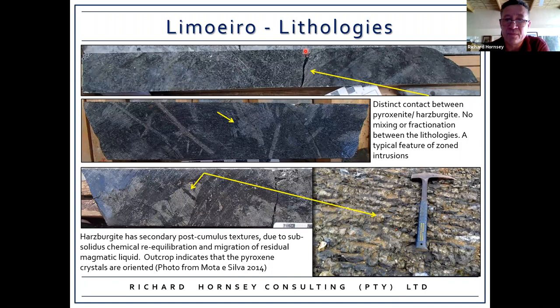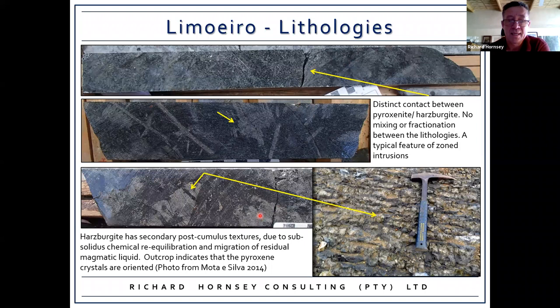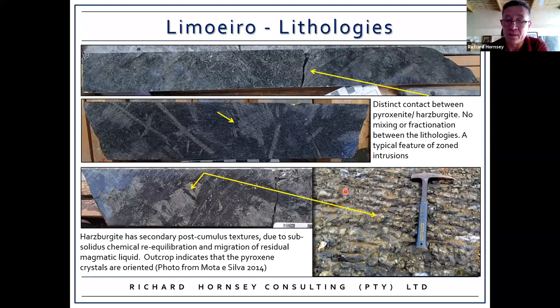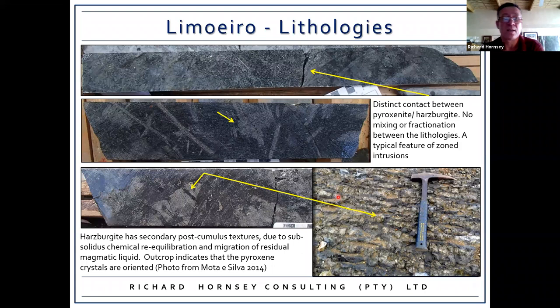Between the pyroxenite and the harzburgite there's a very sharp distinct contact with no evidence whatsoever of fractionation or mixing between these lithologies — another typical feature of conduit intrusions. The harzburgite also shows post-cumulus growth of pyroxenes and amphibole-altered pyroxenes, probably due to incorporation of silica-rich liquids. Importantly, exposures in a quarry show that these textures are consistently oriented and not at all random.